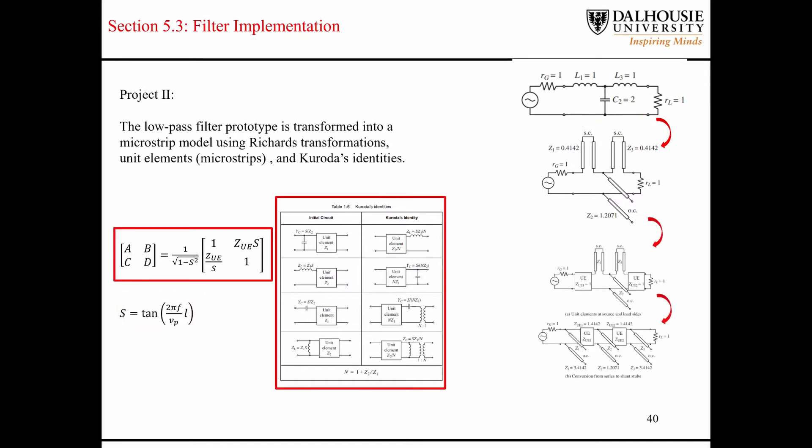The next thing we do is we insert these little sections of transmission lines here. The transmission lines have a normalized characteristic impedance, Z sub UE. Basically what we're trying to do is we're trying to convert these short-circuited series transmission lines, which don't really make a lot of sense physically.